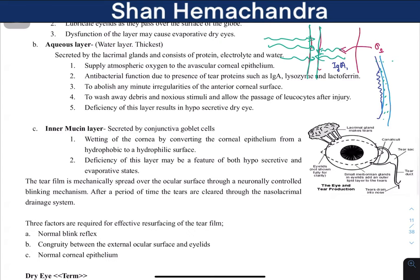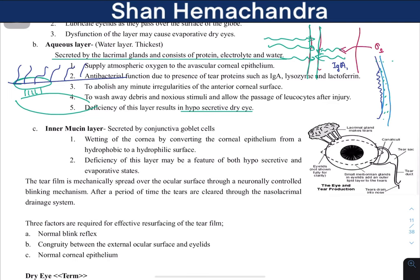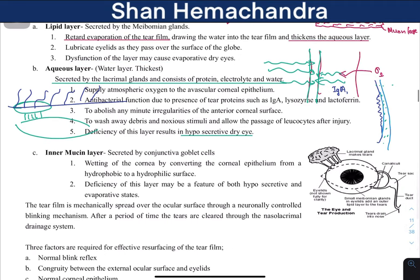If there is a problem in the aqueous layer, it can be due to hyposecretion — that is, decreased secretion of the aqueous component. This is secreted by the lacrimal glands, and if there is a defect in secretion by these lacrimal glands, there is going to be evaporative dry eye.